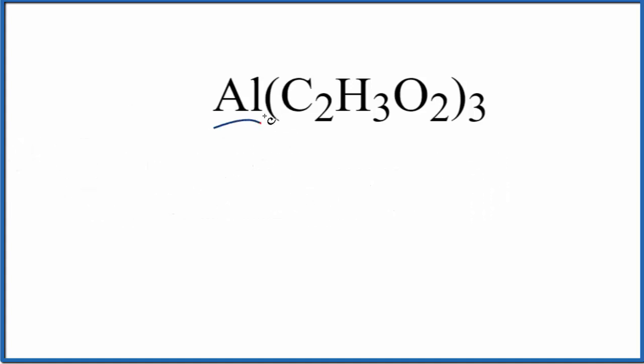So first off, we have aluminum, that's a metal, and then the acetate ion C2H3O2. These are all non-metals. A metal and this polyatomic ion, group of non-metals, this is an ionic compound.